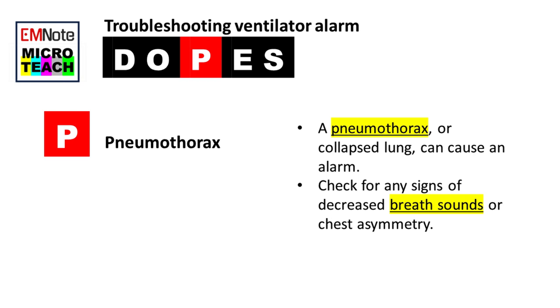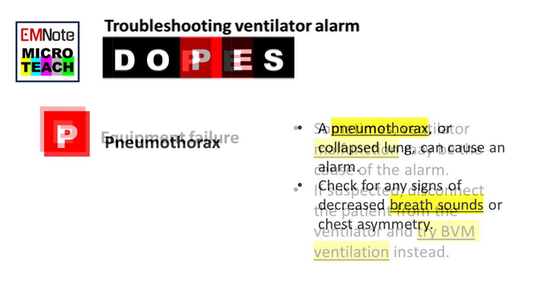P stands for pneumothorax. A pneumothorax, or collapsed lung, can cause an alarm. Check for any signs of decreased breath sounds or chest asymmetry.